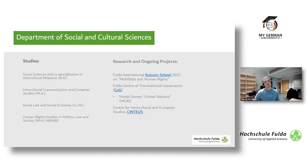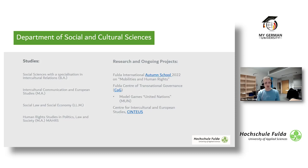The university has eight departments and 60 study programs with approximately 11,000 students enrolled. Our Department of Social and Cultural Sciences has a very strong international orientation, offering social science bachelor's and master's programs. Our research projects educate students about current issues through themed events, and this semester we hosted our annual autumn school on mobilities and human rights.